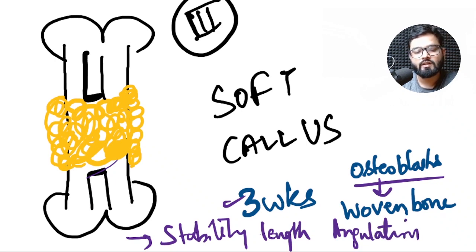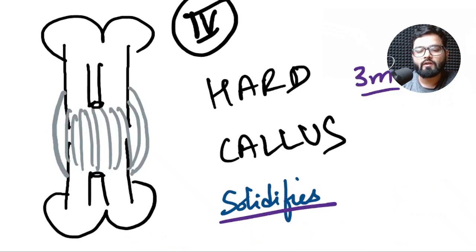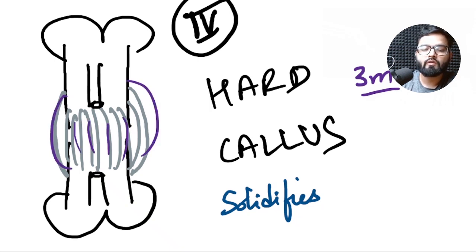At 3 months the soft callus solidifies and forms hard callus around the fracture. There is extensive bridging of woven bone which is strong enough to support the weight of the limb but the bone has not regained its normal structure at this time.